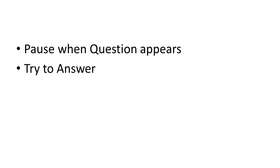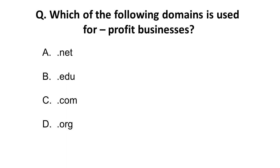The rules are simple: pause the video when a question appears on your screen and try to answer it. The first question is: which of the following domains is used for profit businesses? The options are: (a) .net, (b) .edu, (c) .com, and (d) .org.